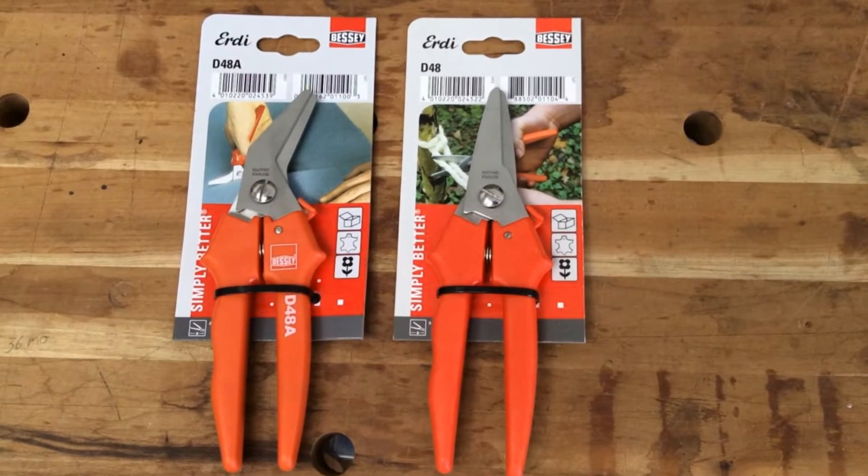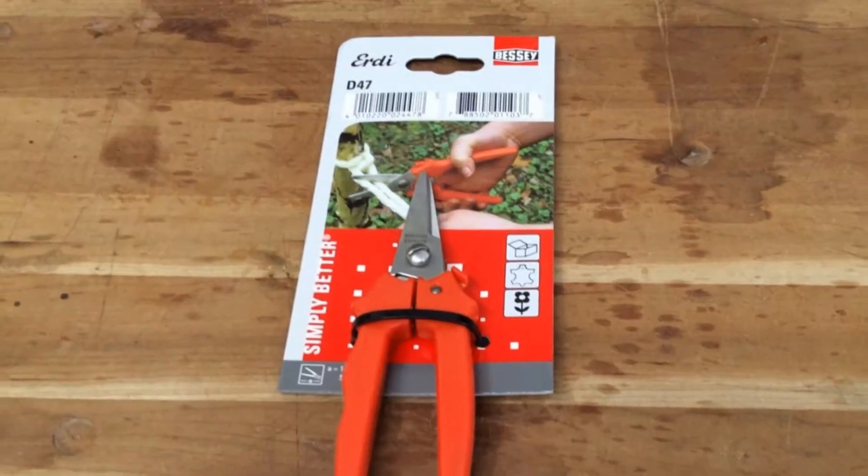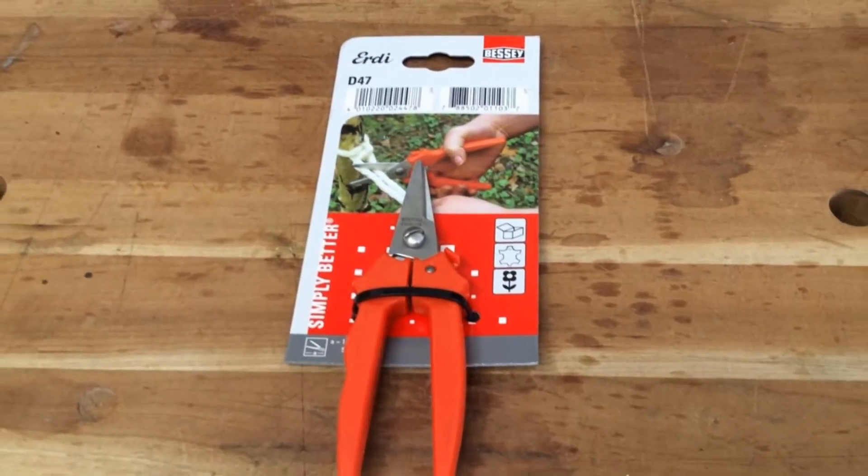Multi-snips are available with both offset and straight blades, and with more compact inch and a quarter straight blades.